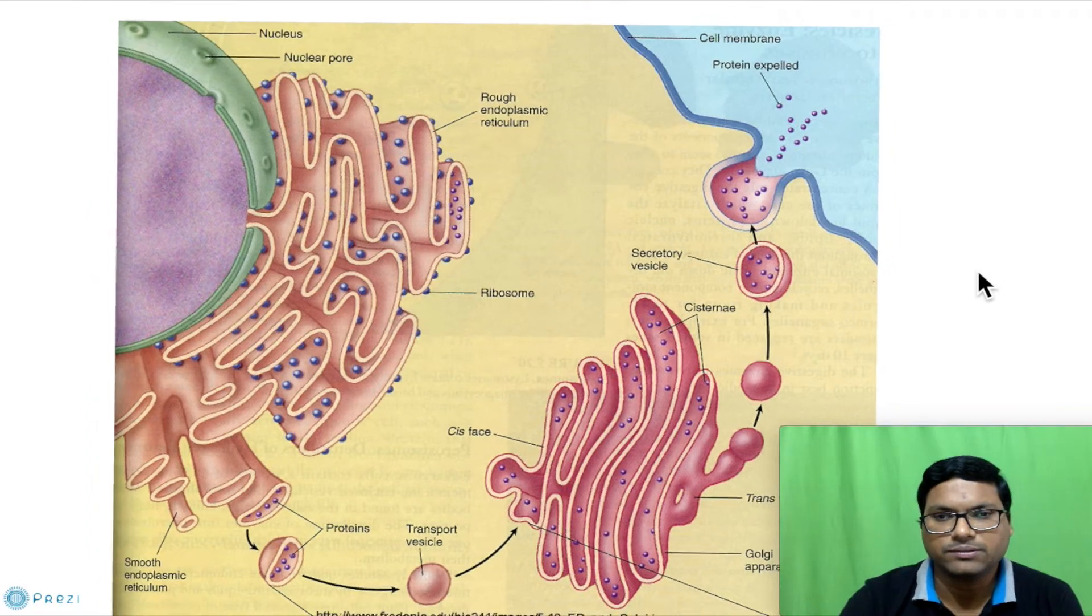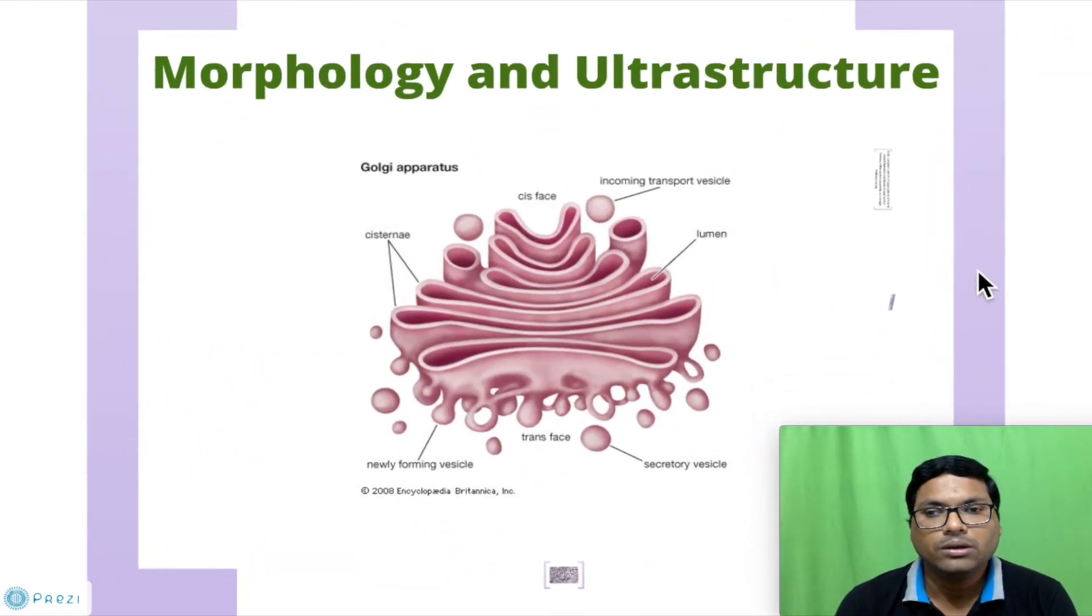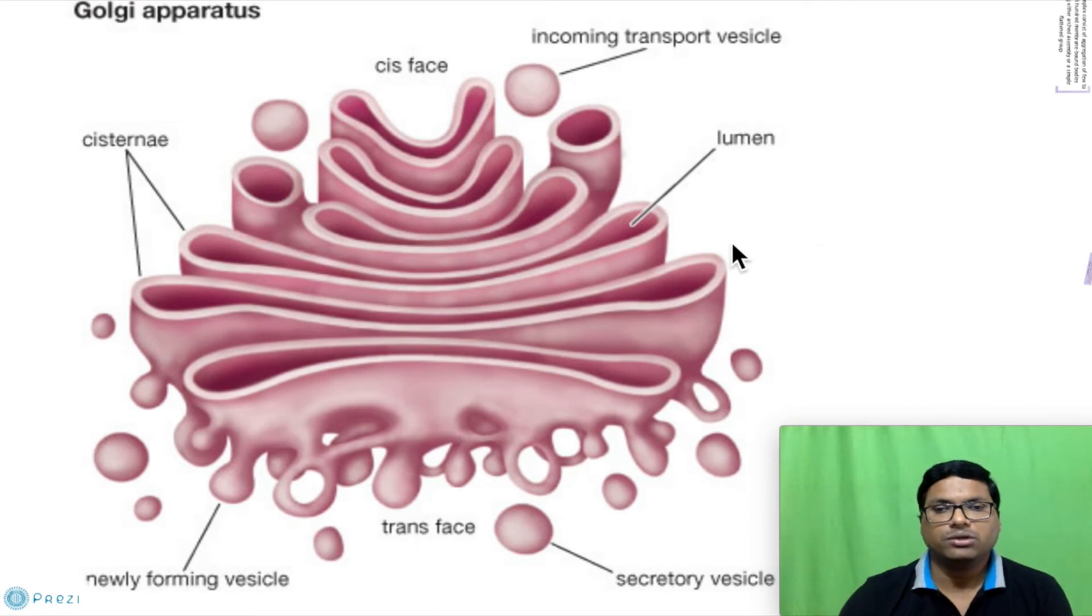Let us come towards the morphology and ultrastructure of the Golgi. As you can see in this diagram, Golgi consists of cisternae. There are many sacs of cisternae present. One end is called the cis face, the opposite end is called the trans face. The cis face receives material from endoplasmic reticulum through incoming transport vesicles and releases the processed material through the trans face via secretory vesicles.